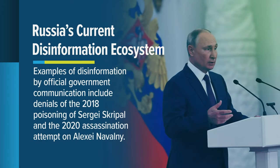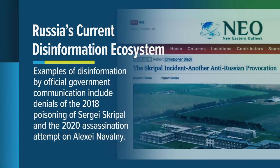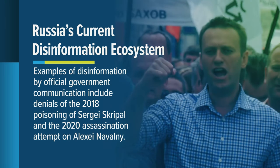The first disinformation pillar, government communication, refers to official statements made by the Russian government. Official statements are a prolific source of disinformation, with examples including the denials of the 2018 poisoning of former Russian intelligence officer Sergei Skripal and the 2020 assassination attempt on opposition leader Alexei Navalny.